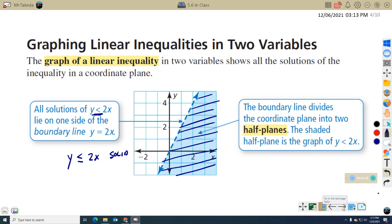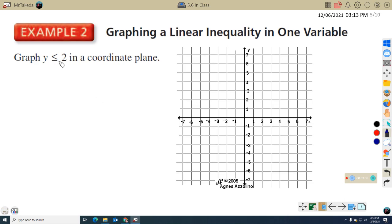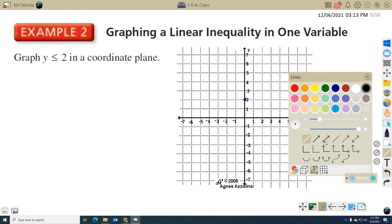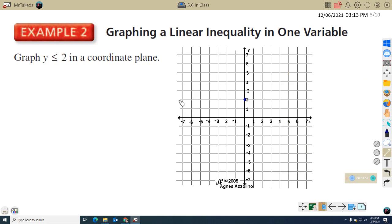Let's take a look at an example here. Y is less than or equal to 2 in a coordinate plane. Where is y equal to 2? Well, we know in a coordinate plane, that's going to be a horizontal line. So let me draw the horizontal line in here. So this is y equals 2. But where is y less than 2? That's going to be below here, so I'm going to do some cross-hatching here.